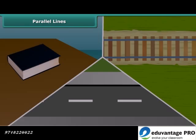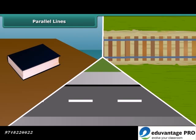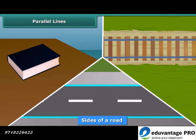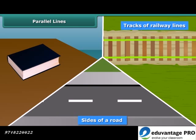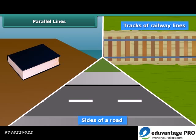A few examples of parallel lines from daily life include the sides of a road, tracks of railway lines, and edges of a book.